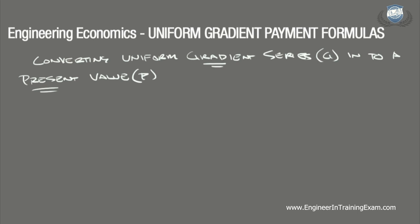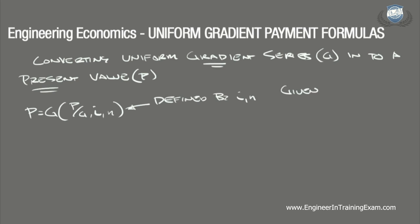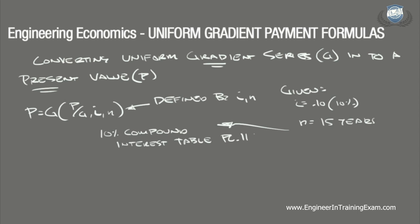The uniform gradient present worth formula written in functional notation is: P equals G times the factor (P/G, i, N). The term P/G, i, N can be found using the given interest rate and period in the compound interest tables starting on page 116 of the NCEES Supplied Reference Handbook. With an interest rate of 10% and N equal to 15 years, we reference the compound interest table for 10% on page 119, locate N equals 15, and find the P/G factor is equal to 40.1520.